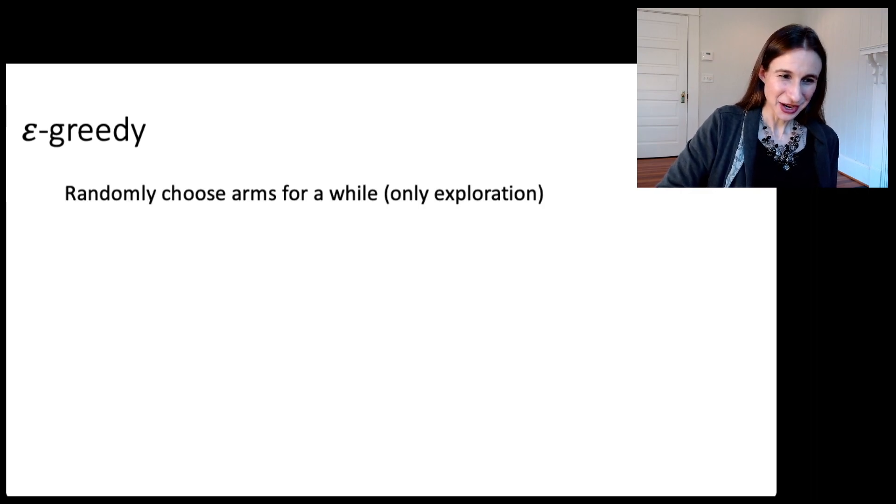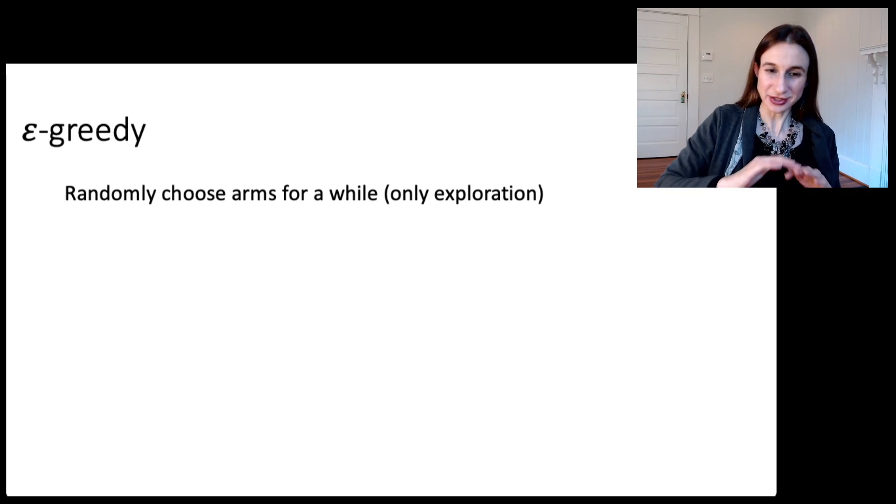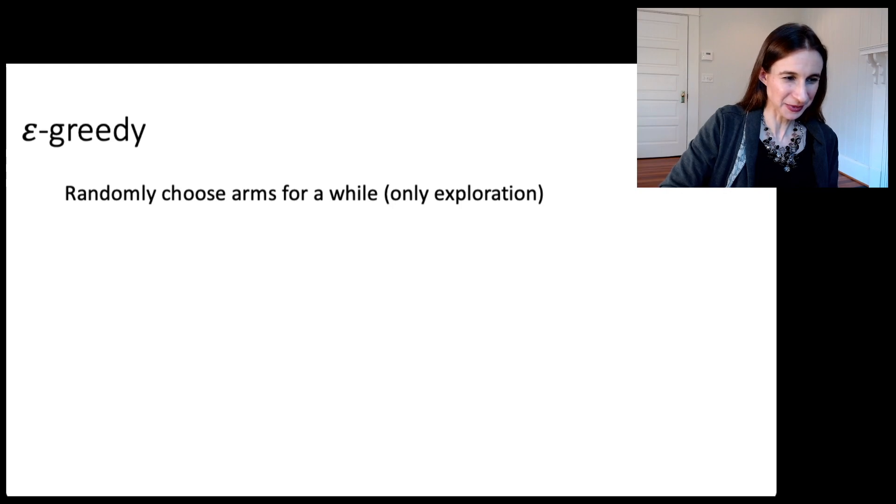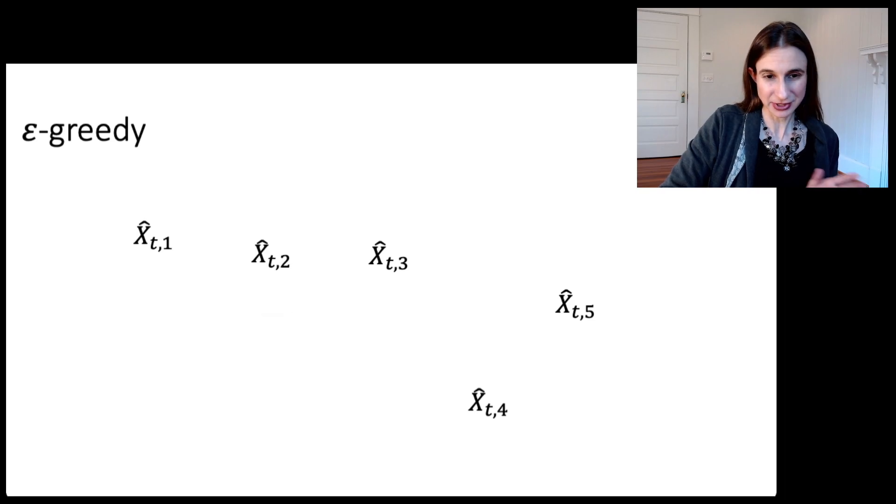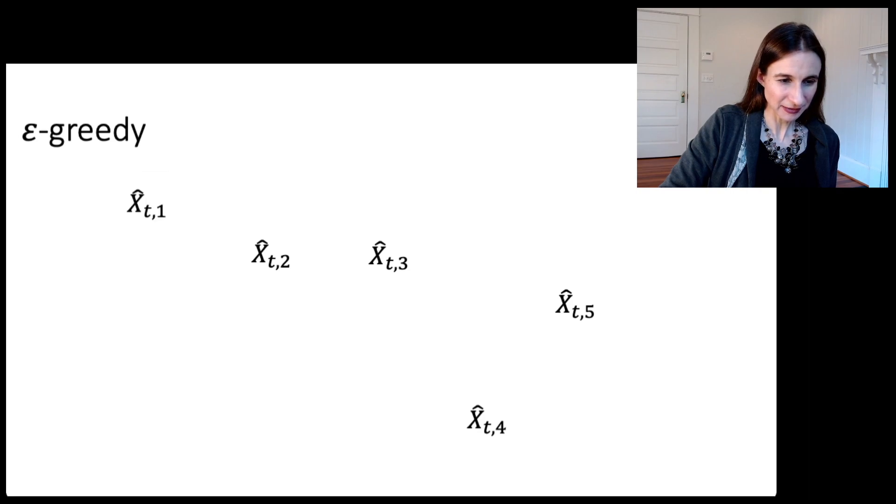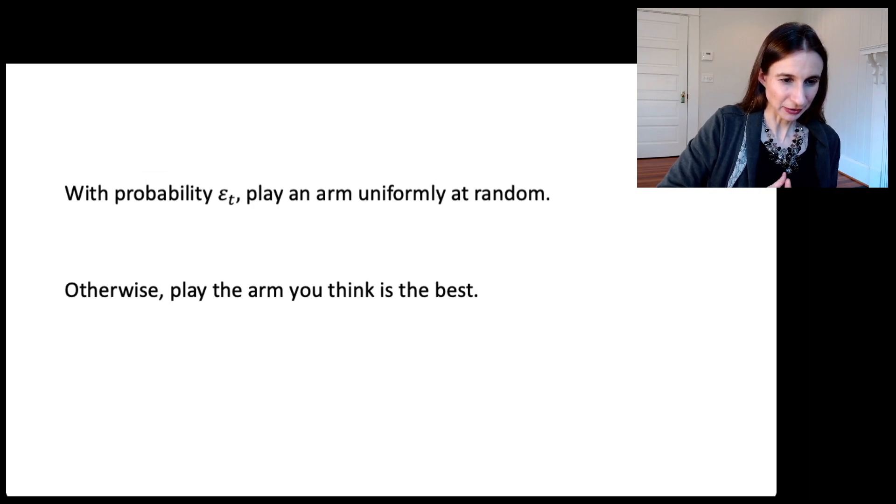Second phase, we're going to randomly choose arms for a while. So this is only exploration. We're just exploring arms. Let's say that we pick arm two, and then its mean reward ends up going down as a result because the reward we got was lower than the estimated mean from earlier. X4 we pick, we adjust its mean reward. X1.